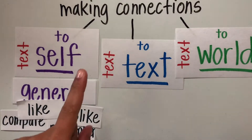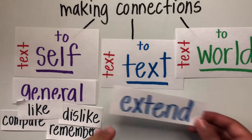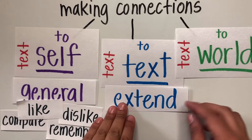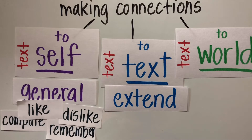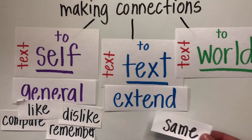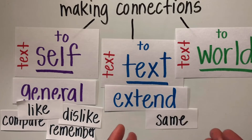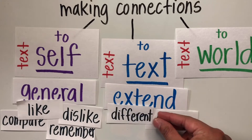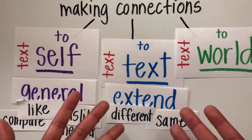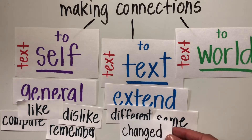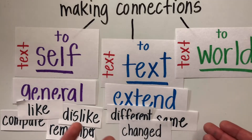When you're making text-to-text connections, you have to extend your thinking a little bit more on the stories you have read — a book or something that you have read that is the same or similar to this text. What made both of the texts different, what scene changed, what character changed.